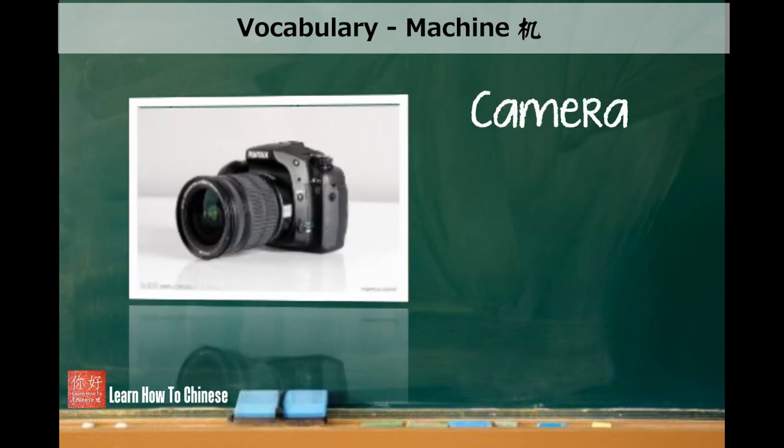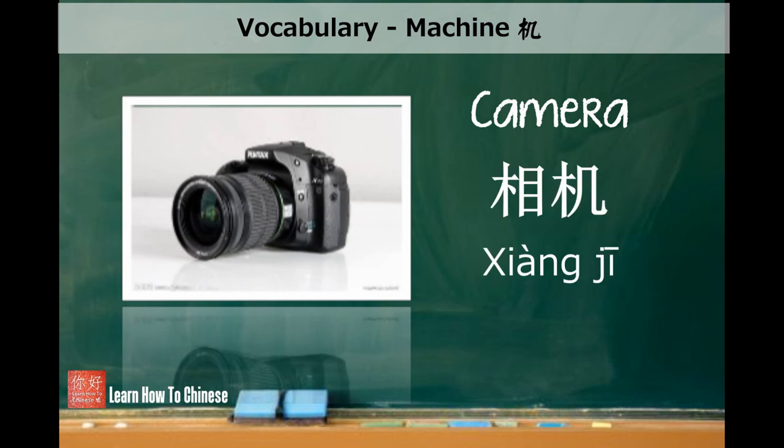The last one is camera. A camera is called xiang ji. Xiang means photo, and ji is machine. So together, you get photo machine.